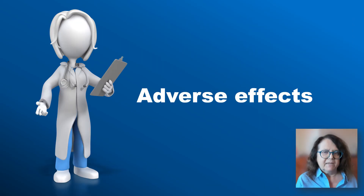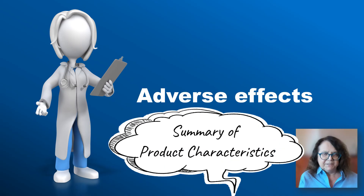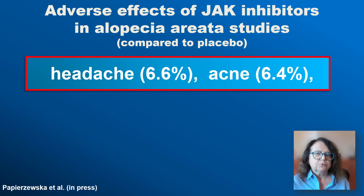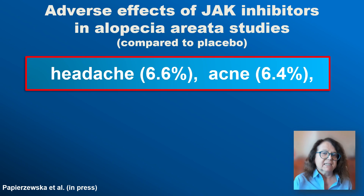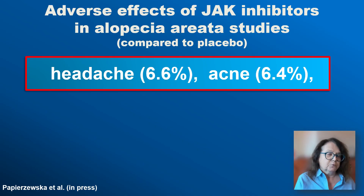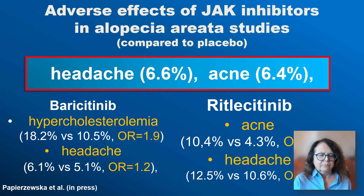I will briefly mention adverse events. A full list is available in the SPC of both medications. In an analysis we performed, the two most common adverse events of JAK inhibitors used in alopecia areata are headache and acne. The acne in most cases is quite mild and topical therapy is sufficient to control it. Other adverse events for baricitinib include hypercholesterolemia. Here are the numbers for acne and headache.